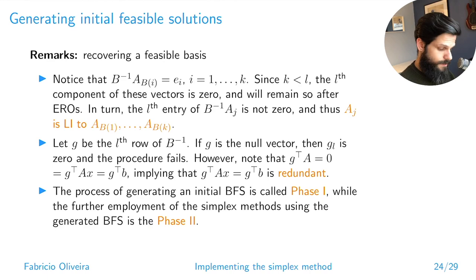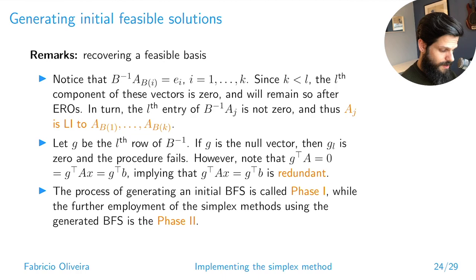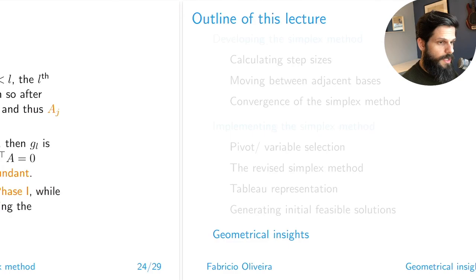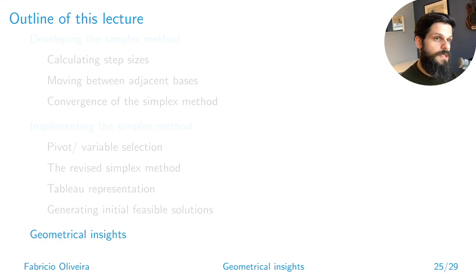This first phase of finding basic feasible solutions is called Phase 1. The second phase — passing that basis to the normal simplex with the original objective function and no artificial variables — is called Phase 2. Together, this is the two-phase simplex method, which is the standard form you'll actually be implementing. In the next video, we'll look at some geometrical insights of the simplex method to give an idea of why it converges much faster than one would expect.